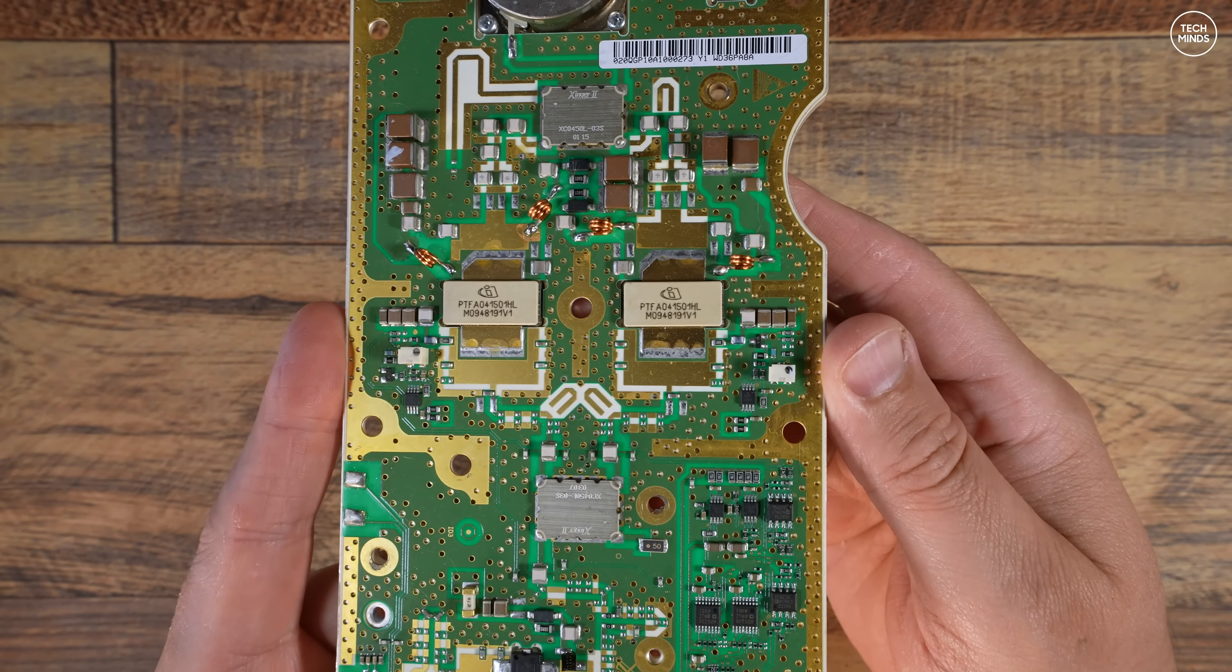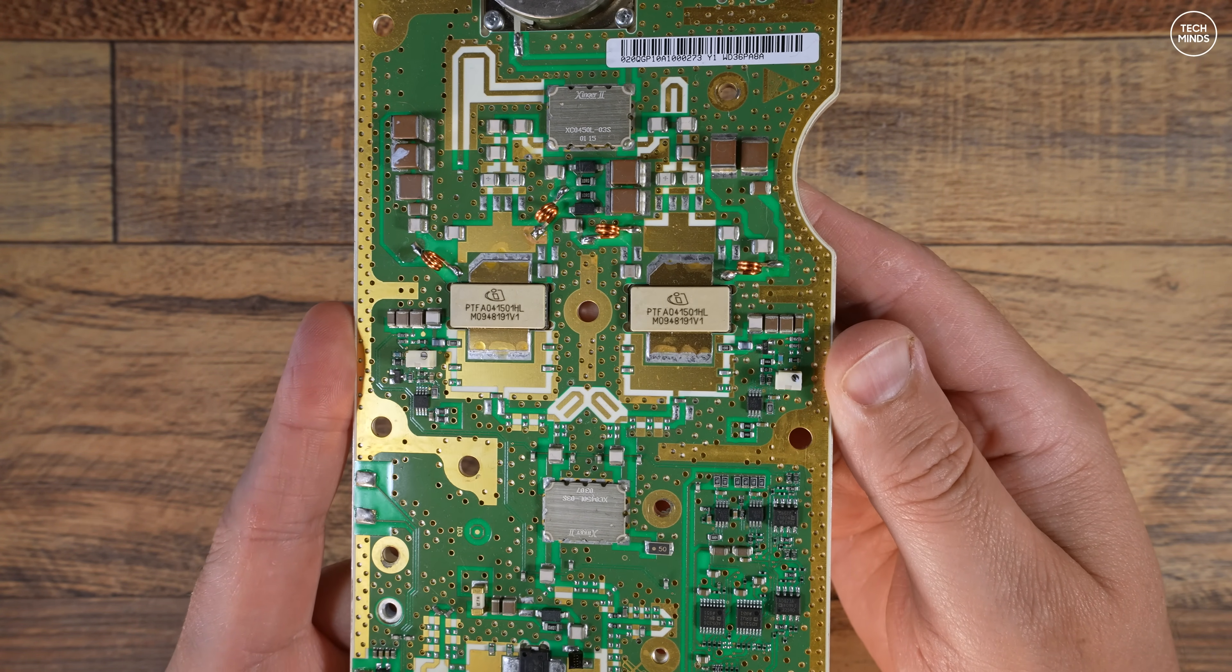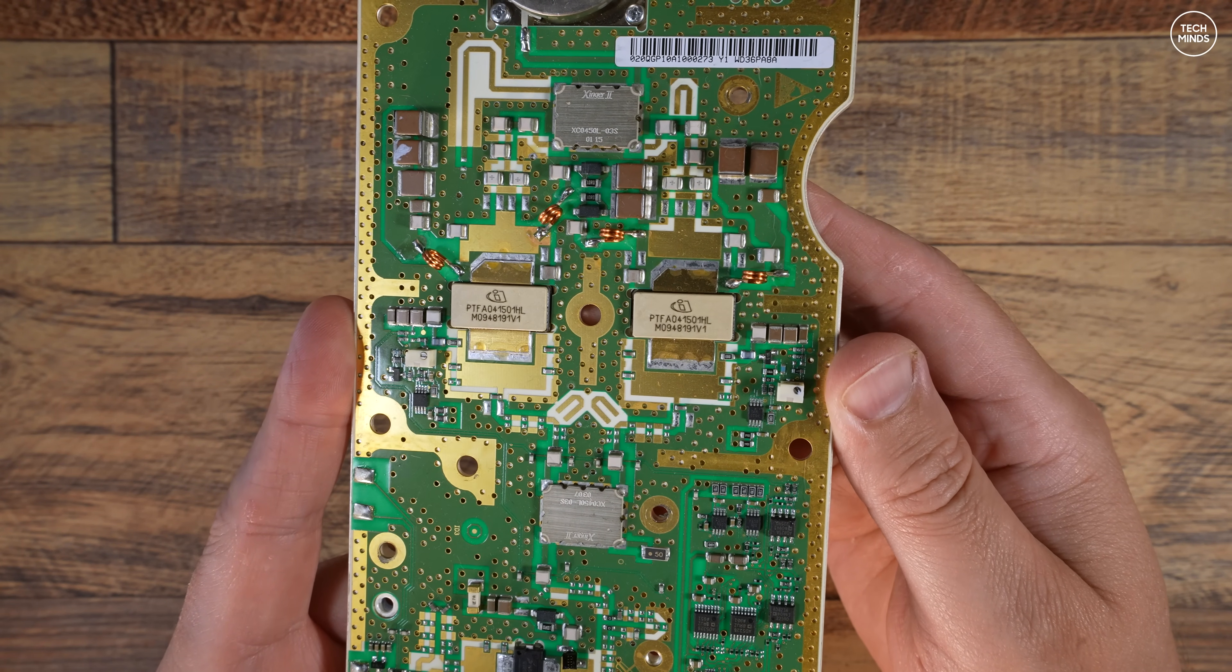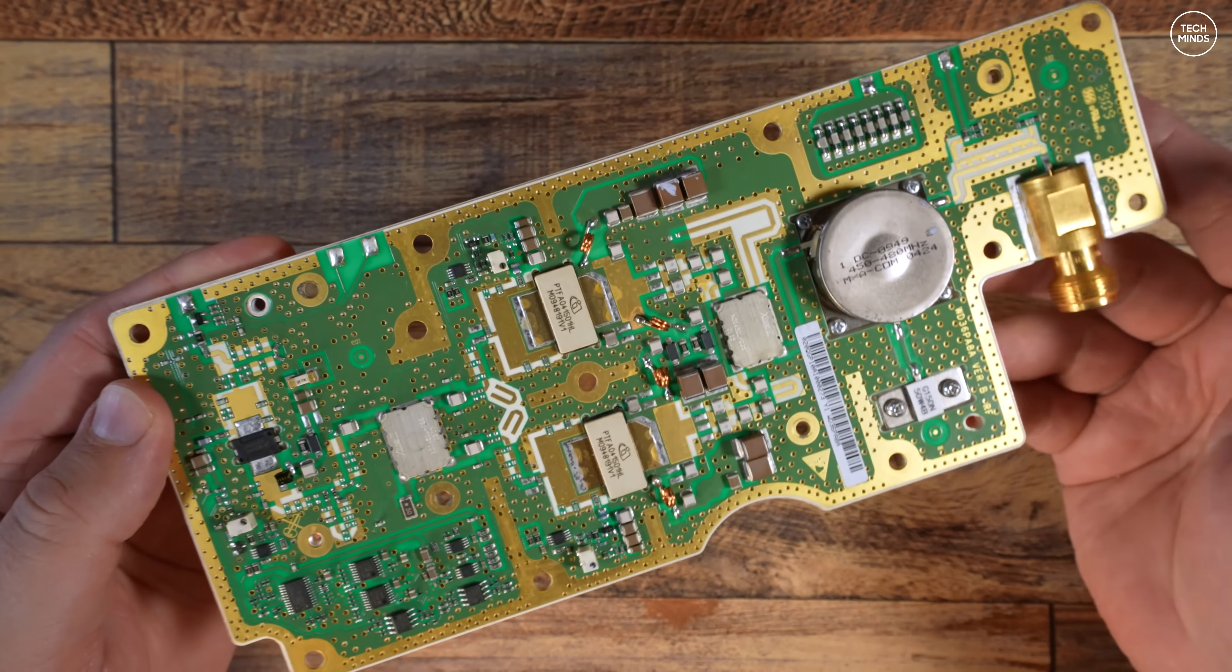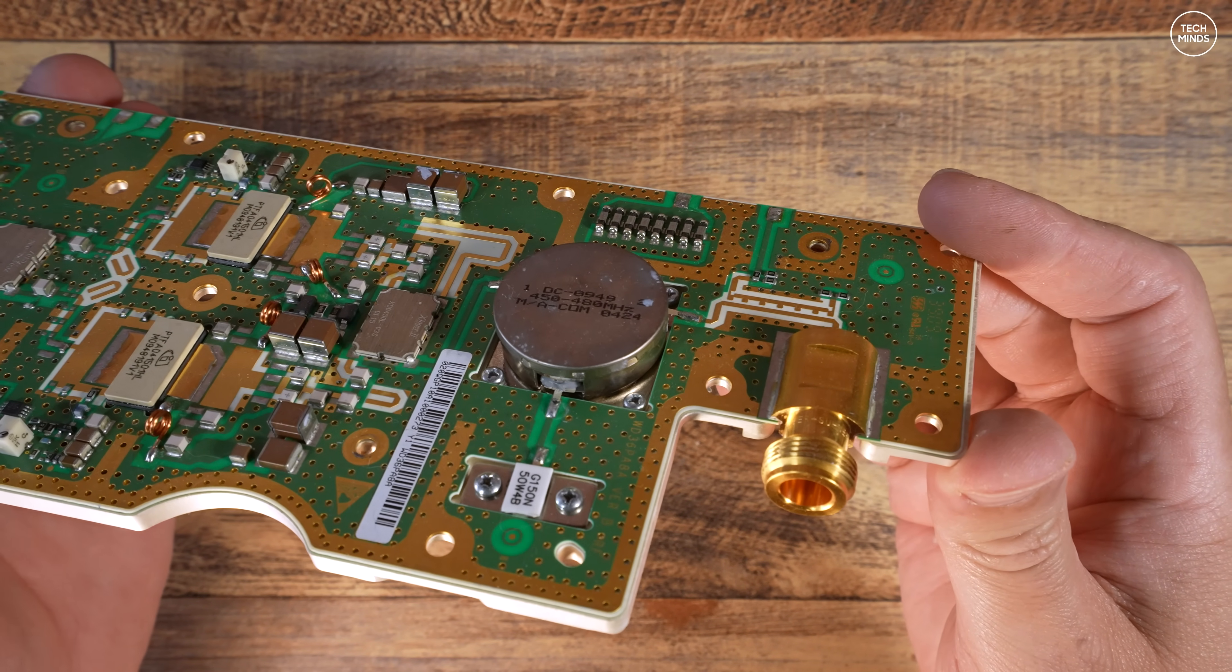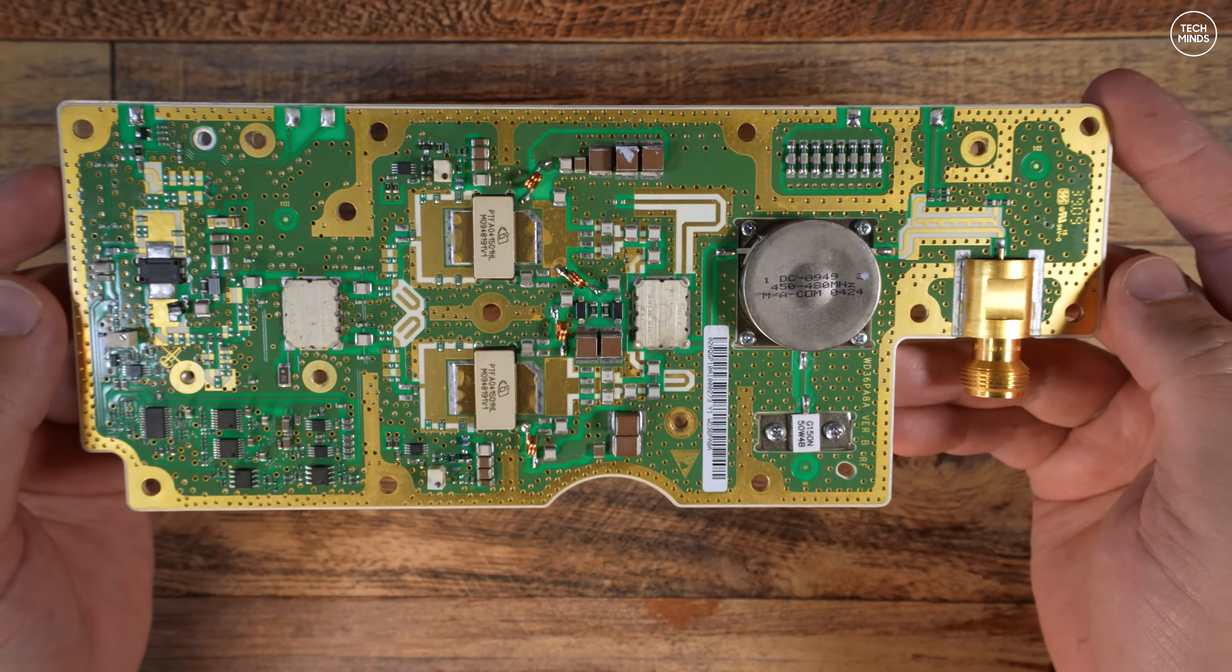It will also require a pretty hefty low pass filter mounted onto the output before it goes to the antenna, and this is what we're going to build in today's video. If you're interested in seeing the amplifier's build, make sure to be subscribed so you don't miss those videos. Let me know in the comments if that's something you'd be interested in seeing.